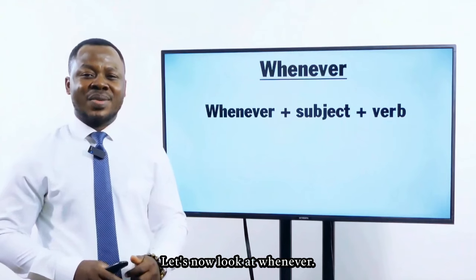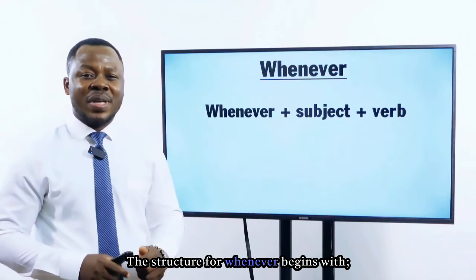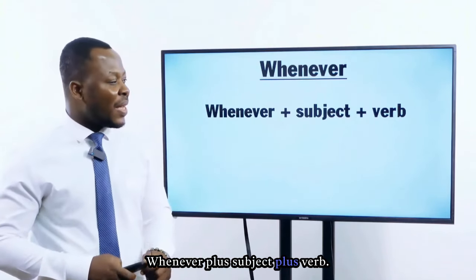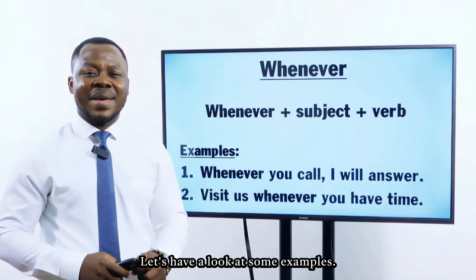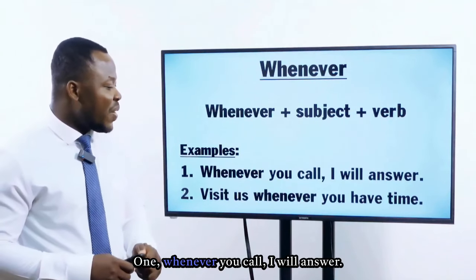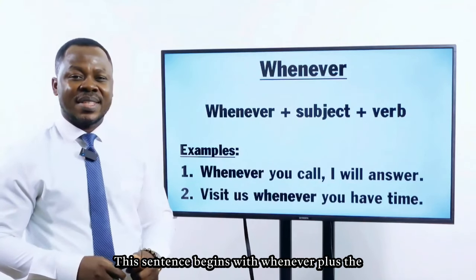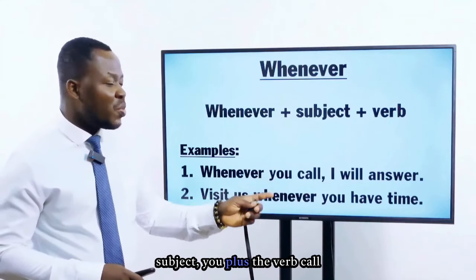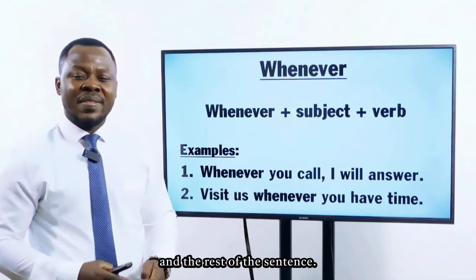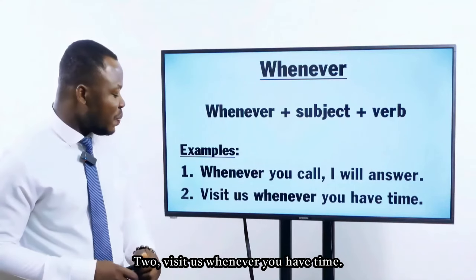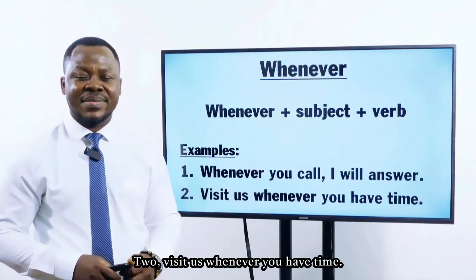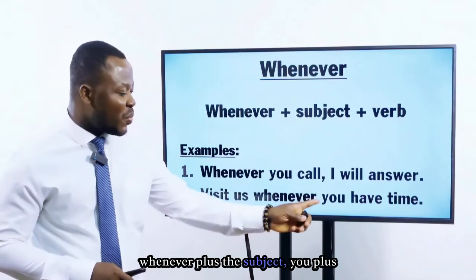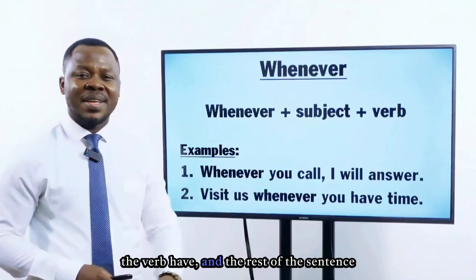Let's now look at whenever. The structure for whenever begins with whenever, plus subject, plus verb. Let's have a look at some examples. Example 1: whenever you call, I will answer. This sentence begins with whenever, plus the subject 'you', plus the verb 'call', and the rest of the sentence. Example 2: visit us whenever you have time. In this sentence, we've got whenever, plus the subject 'you', plus the verb 'have', and the rest of the sentence.